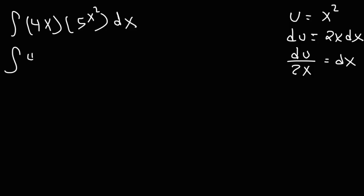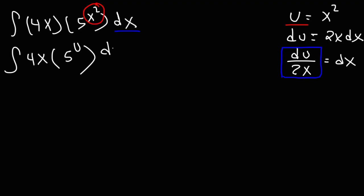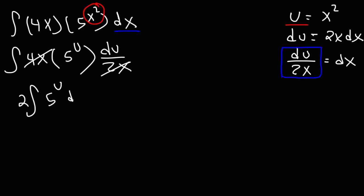So we have the integral of 4x times 5. Now let's replace x squared with u, so this becomes 5 raised to the u power. And let's replace dx with du over 2x. So 4x divided by 2x equals 2, giving us 2 times the integral of 5 raised to the u du.